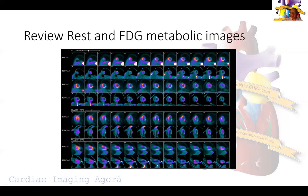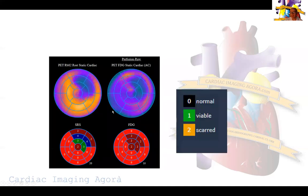Next we look at the FDG images to see if there is any uptake in the area of the rest defect. In the FDG images there is no uptake — the defect seen on rest images is also present on the FDG metabolic images. Therefore this is by definition scarred myocardium: a matching defect between the rest images and the FDG images. We scored these segments following the American Society of Nuclear Cardiology guidelines where a score of 1–2 indicates viable and 2 indicates scarred, scoring all these segments as scar in the inferolateral territory.